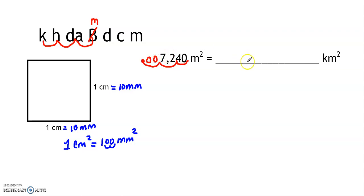That gives me .007240 square kilometers. If I want to convert from square meters to square centimeters, I would move my decimal two, four places to the right.